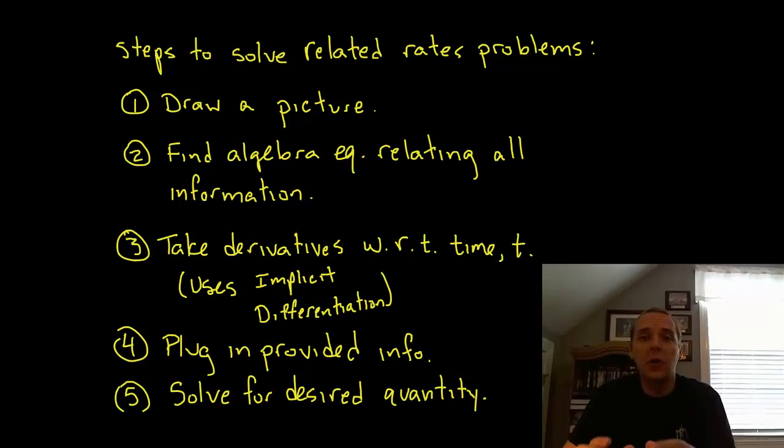First, we want to draw a picture of the situation if it's not already drawn. Second, there's going to be movement, but if you took a snapshot of the situation there should be some sort of algebra equation that relates all the quantities, whether it be area, volume, radius, or length. But there's no rates yet, so to get the rates you have to differentiate those terms with respect to time to get feet per second or square inches per minute.